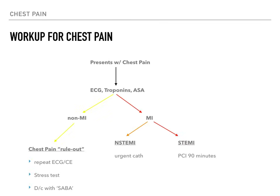Let's talk about the high yield workup for chest pain. If a patient presents with chest pain, the first thing you do is get an ECG — if you have to choose between five different options, the answer is ECG, because you need to know right away: is this a STEMI? In real clinical practice, you'll order an ECG, order cardiac enzymes, give the patient aspirin, get them on a monitor, and prepare for the worst case scenario.